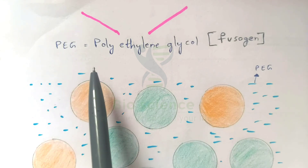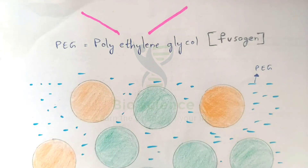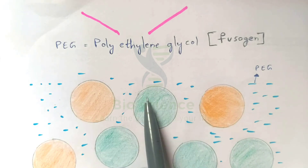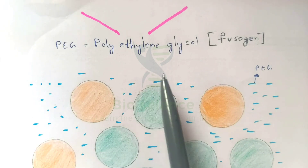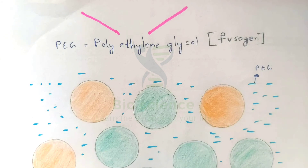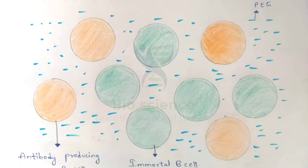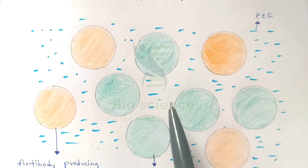Now we take both cells and expose them to a chemical called PEG, which is Polyethylene Glycol. PEG acts as a fusogen, meaning it causes the cells to fuse. In order to obtain a hybrid cell, we need to fuse the antibody-producing B cell with the immortal B cell. In the diagram, the blue liquid shown is PEG — Polyethylene Glycol.